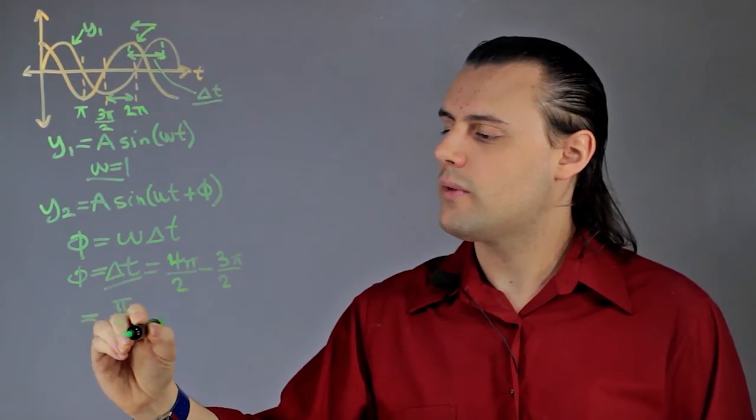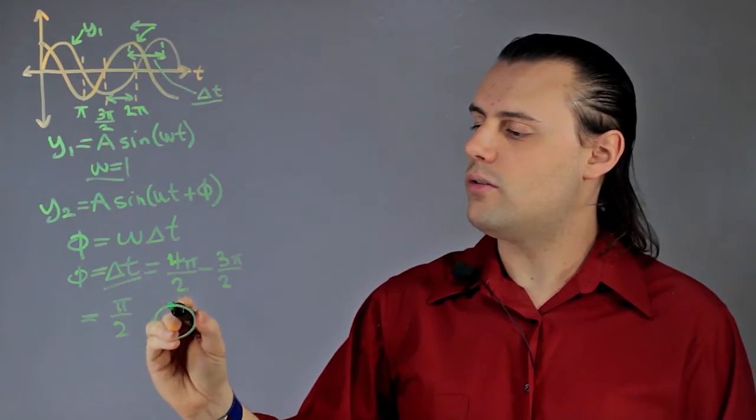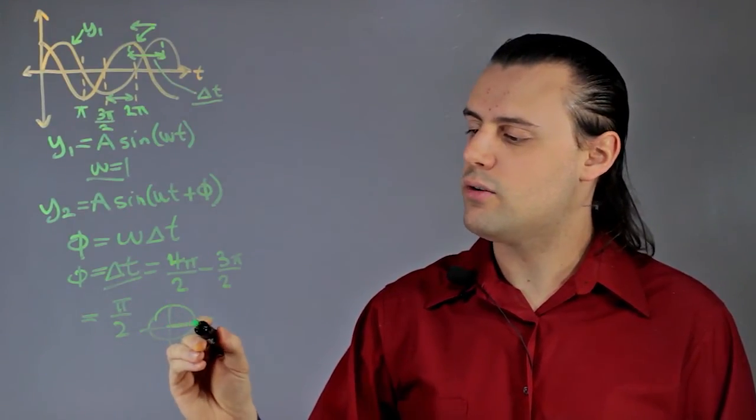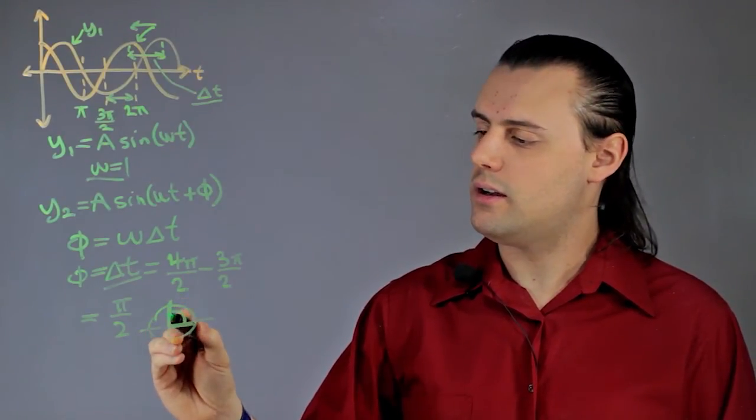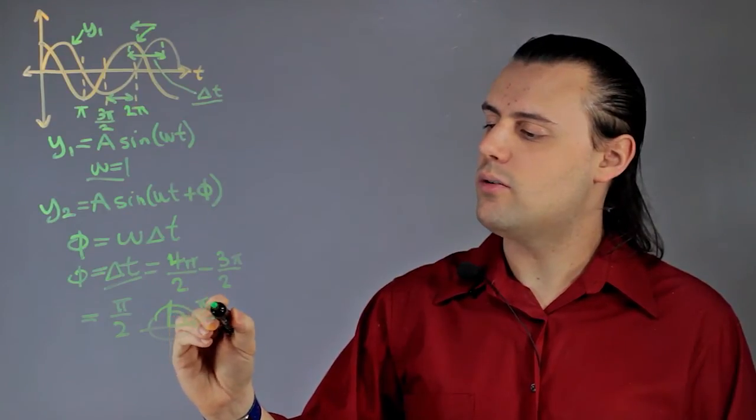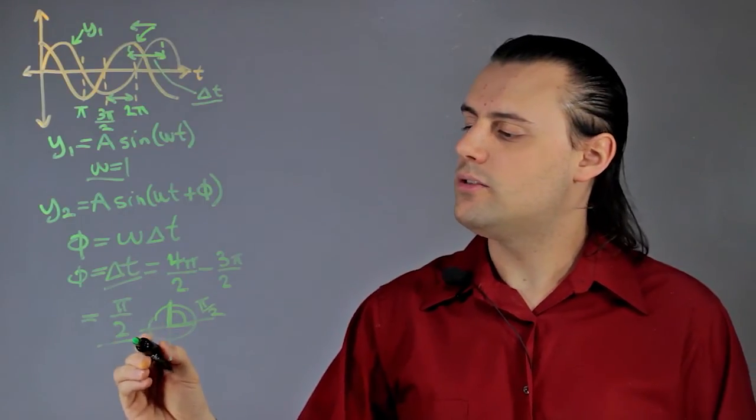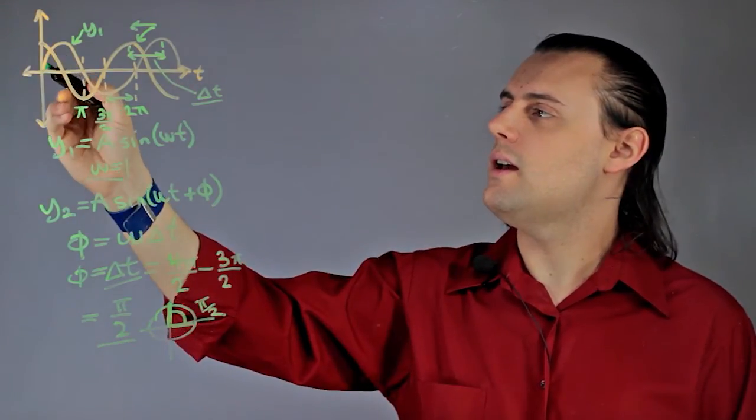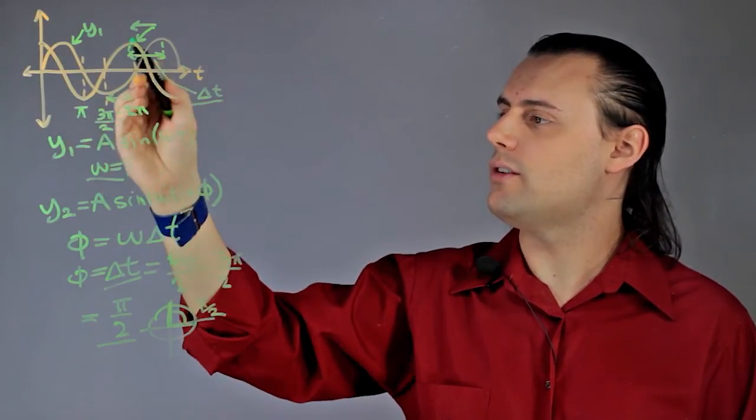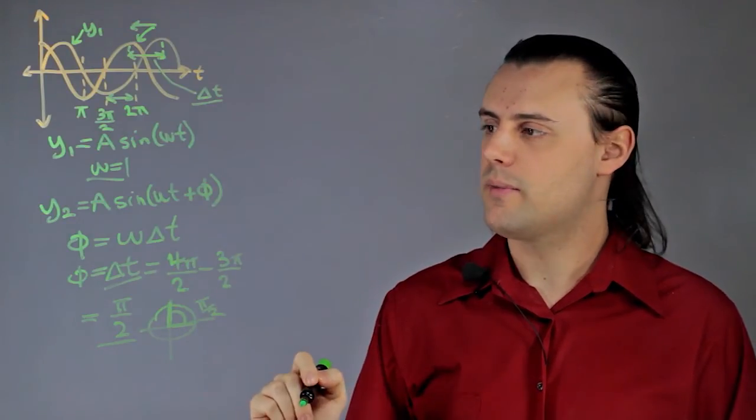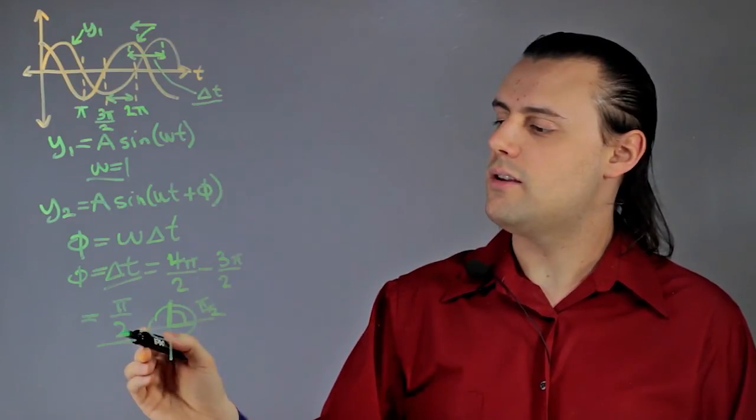That would be my phase difference. Now I can understand in the unit circle why cosine, which is the horizontal component, is separated an angle by 90° or π/2 from sine, which is the vertical component. It's all due to this phase difference between a sine function and in this case what turned out to be a cosine function. So cosine is simply sine but with an added phase difference that is equal to π/2.